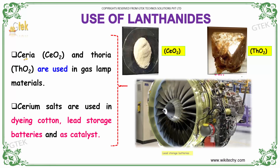Ceria and thoria are used in gas lamp mantles. Cerium salts are used in dyeing cotton, lead storage batteries, and as catalysts.